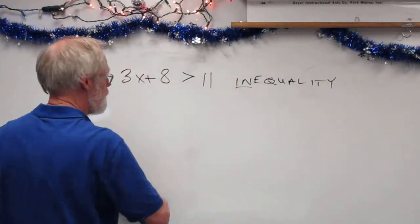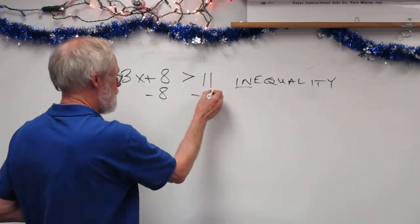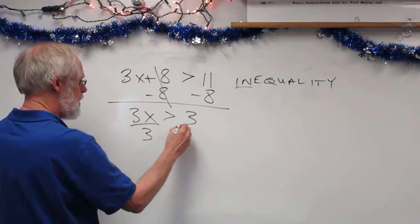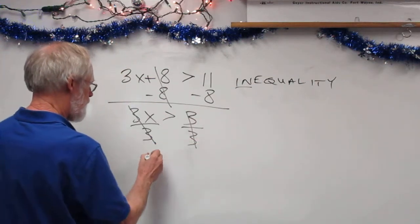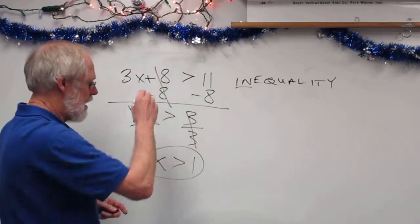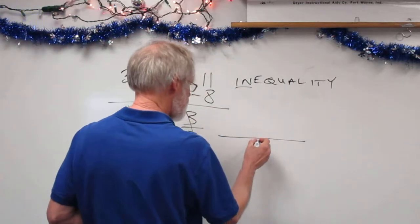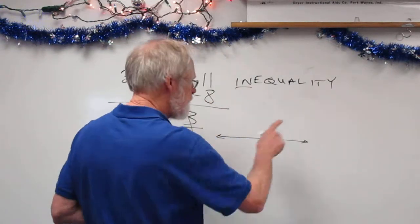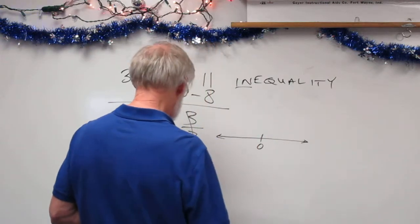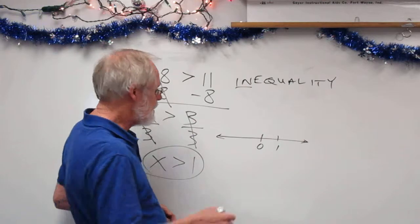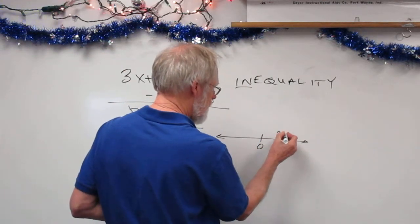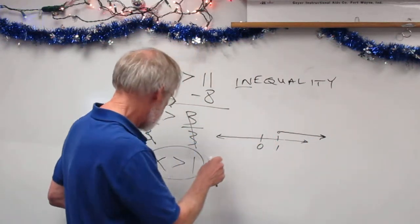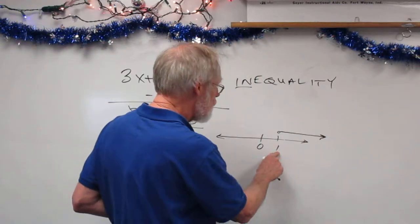This one is pretty simple to solve, just like an equation. We subtract the 8, and we get 3x is greater than 3. Divide by 3, and we get x is greater than 1. If we wanted to graph that on a number line, I would indicate with arrows that the number line continues infinitely in both directions. I'd put 0 and then 1, and since x is greater than 1, it goes to the right. I put an open circle at 1, because x is greater than 1 but cannot equal 1.